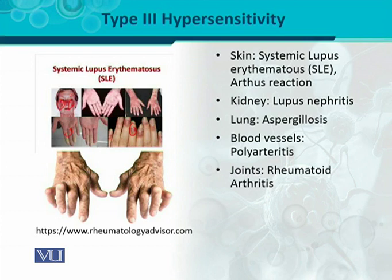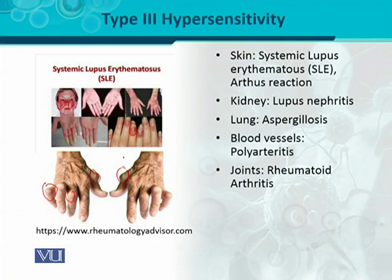In the case of joints, type 3 hypersensitivity manifests as rheumatoid arthritis — inflammation of the joints. In the figure you can see the joints of the hands and fingers are inflamed and D-shaped, damaged in such a way that the immune complexes have deposited there, causing joints to become denatured and D-shaped. That is an abnormal condition called rheumatoid arthritis.